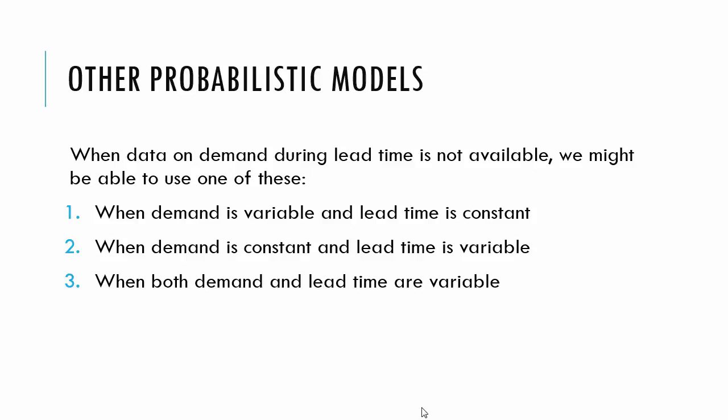If we have demand is variable and lead time is constant, is one case, basically you have a really good supplier. When demand is constant and lead time is variable, you might have some kind of contract where someone is buying something so much every month. Lead time is variable means your suppliers may not be 100% reliable.